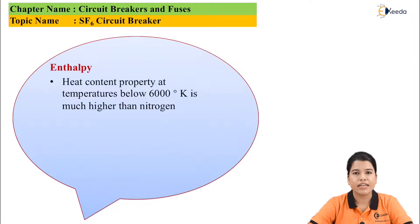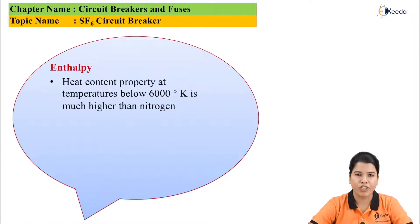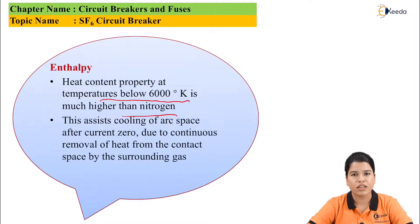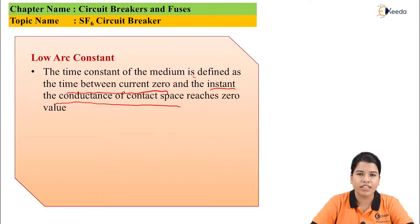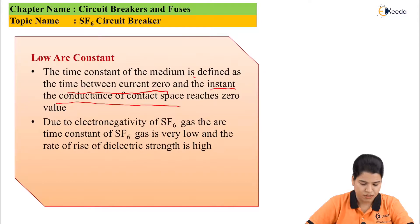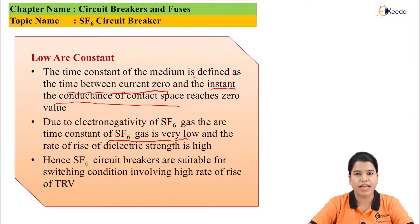The next property is enthalpy. The heat content of SF6 gas at temperatures below 6000 degrees Kelvin is much higher as compared to nitrogen. This property assists in the removal of current due to constant cooling provided by fresh SF6 gas. The next property is low arc time constant, defined as the time between current zero and the instant the conductance of the contact space reaches zero. Due to the electronegativity of SF6 gas, its arc time constant is very low compared to the rate of rise of restriking voltage, making SF6 gas very useful at high values of TRV — transient recovery voltage.